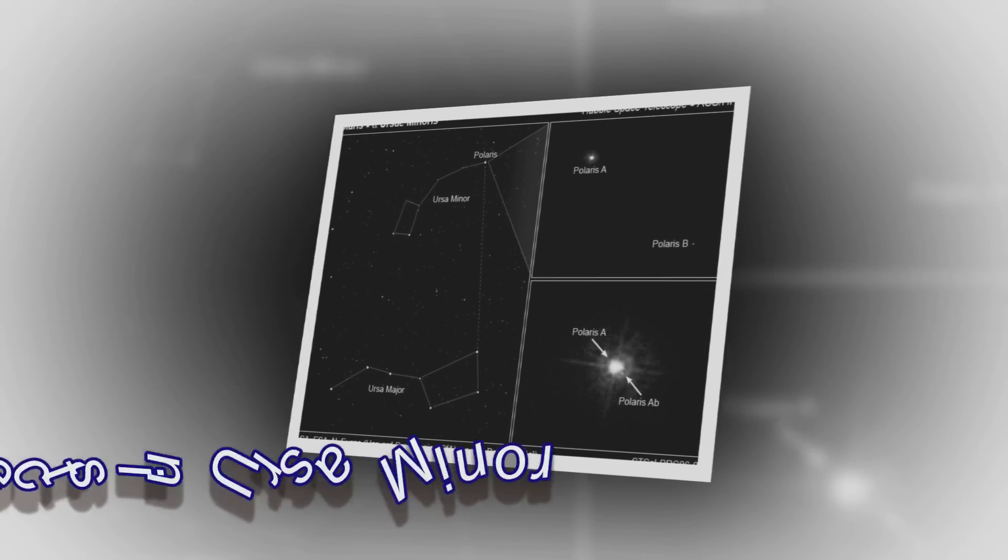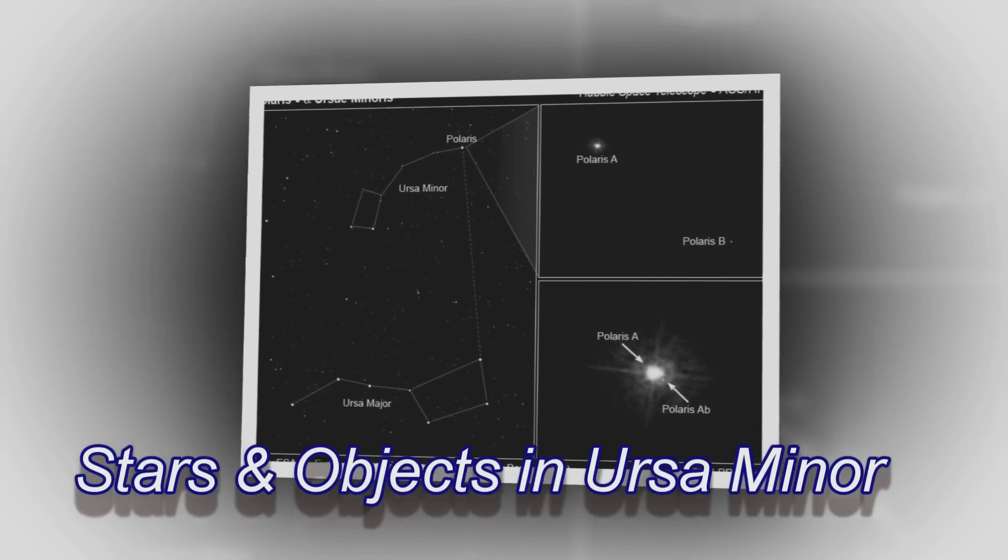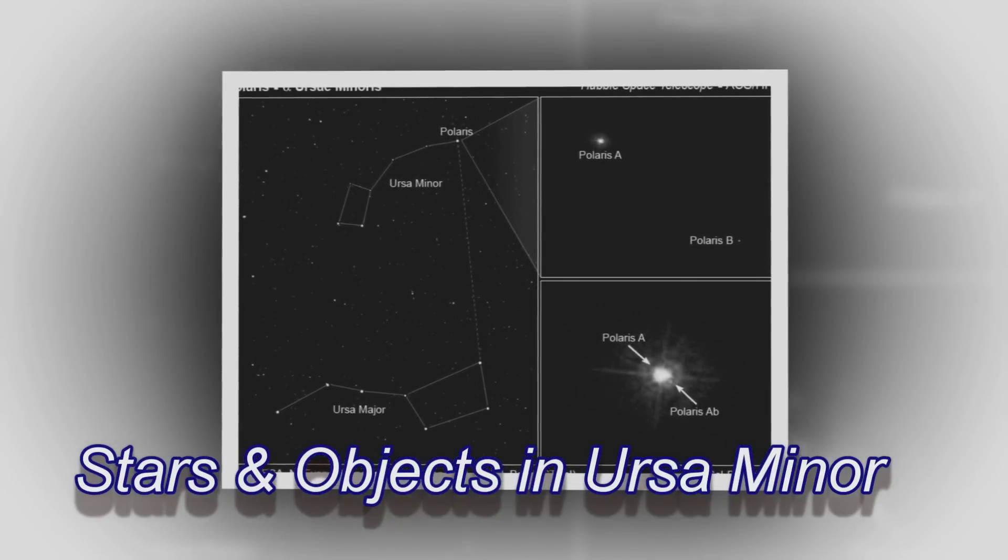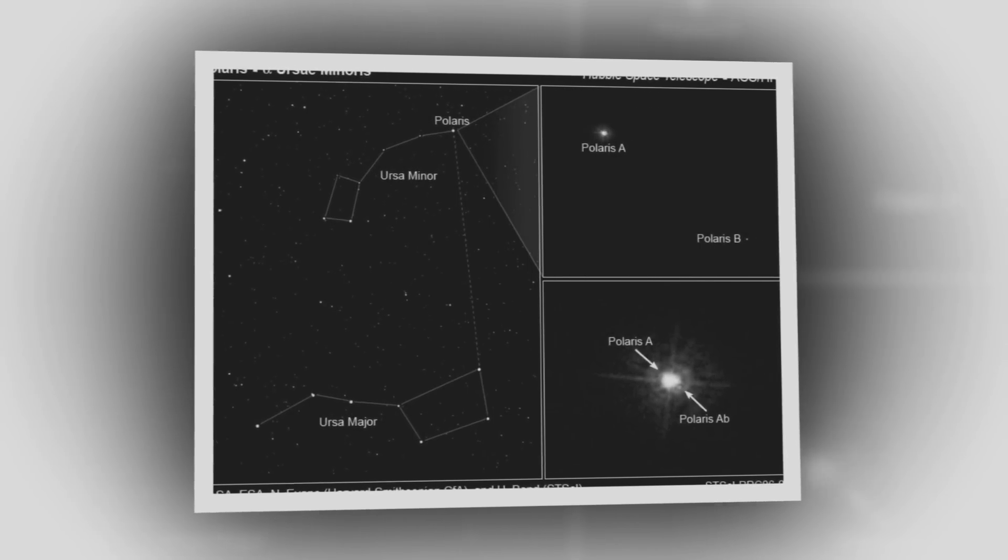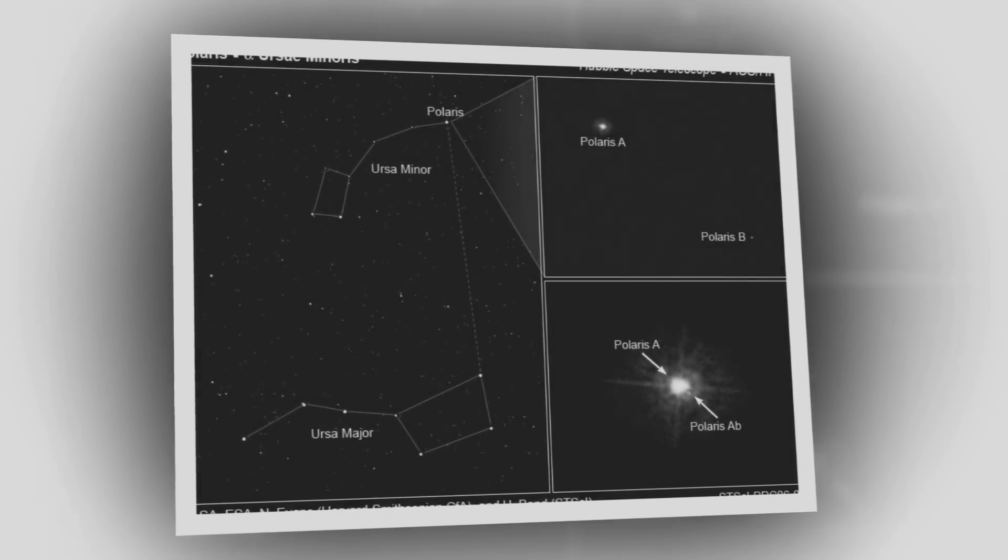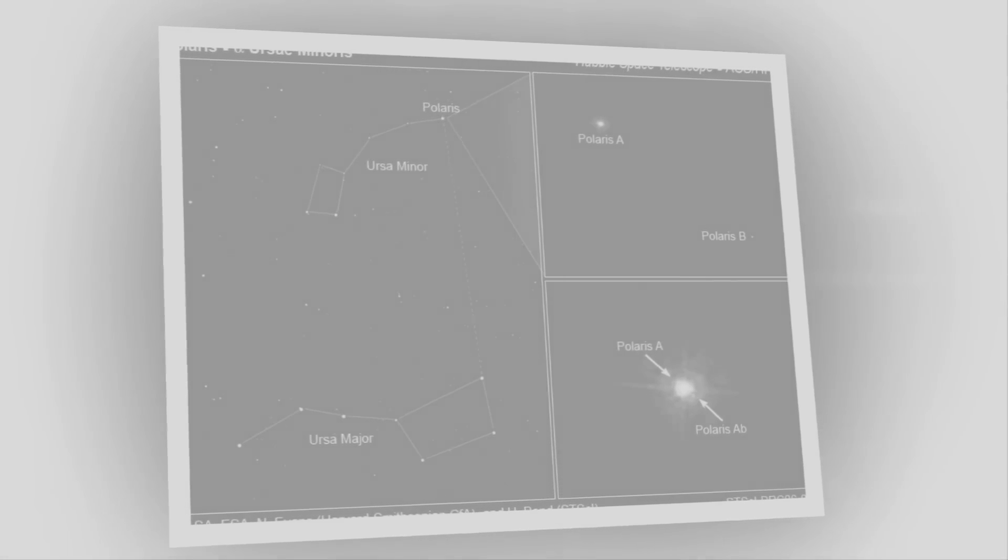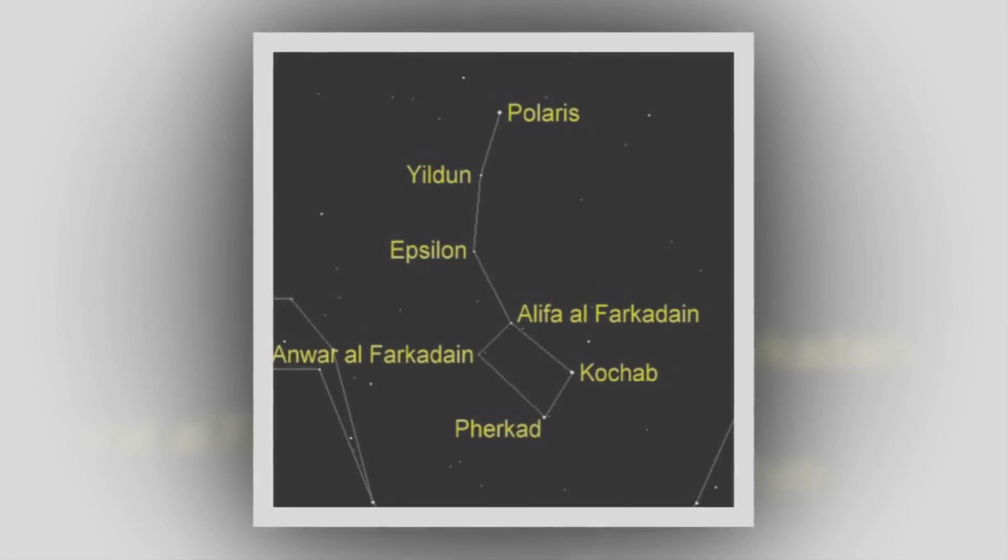Ursa Minor contains one star with a confirmed planet and has no Messier objects. The brightest star in the constellation is Polaris, the North Star, Alpha Ursae Minoris, with an apparent visual magnitude of 1.97. Along with Polaris, there are six other stars that make up the Little Dipper.